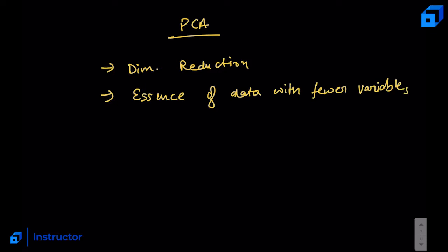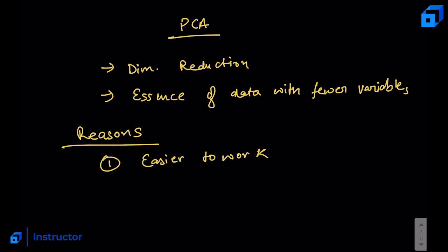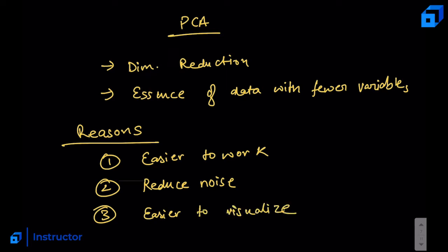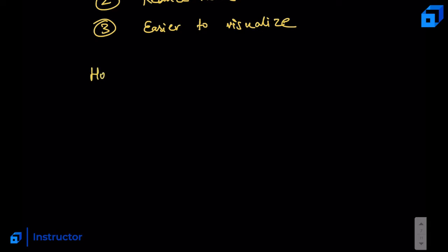Why do we actually need to reduce dimensions? There are a couple of reasons. First, with fewer dimensions it makes your work easier — you probably cannot comprehend working with thousands of variables, but if you can reduce it to a couple of hundreds it becomes manageable. Second, you reduce noise in the data — dimensions which add little explanation to the underlying data can be removed. Third, it is easier to visualize the data. You can plot 2D or 3D datasets, but with more than a couple of hundreds of dimensions it becomes very difficult to visualize what the data actually looks like.